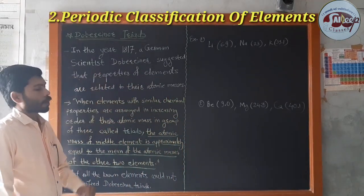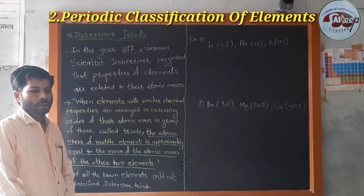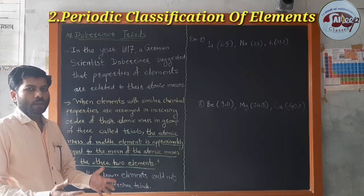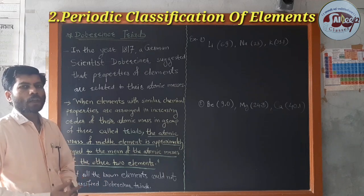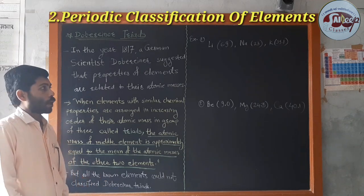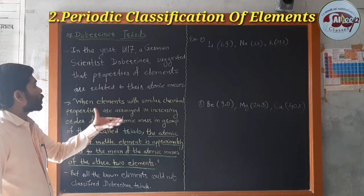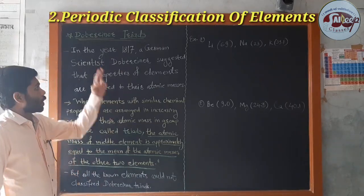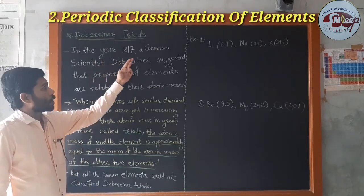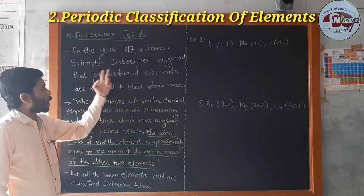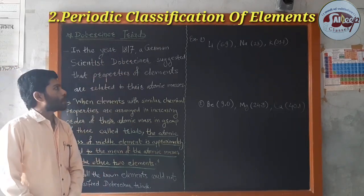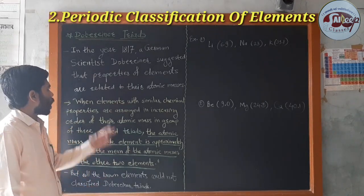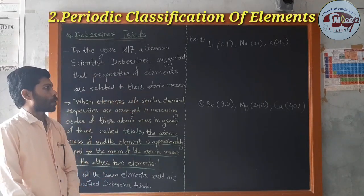The first scientist we discuss is Dobereiner's Triads. In the year 1870, a German scientist Dobereiner suggested that properties of the elements are related to their atomic masses.